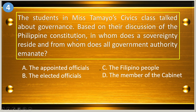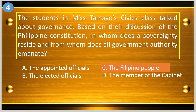Question number four: the students in Ms. Tamayo's Civics class talk about governance based on their discussion of the Philippine Constitution — in whom does sovereignty reside, and from whom does all government authority emanate? A, the appointed officials; B, elected officials; C, the Filipino people; and D, the members of the cabinet. The answer is letter C, the Filipino people.